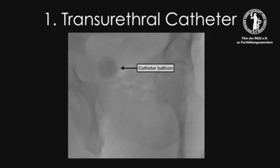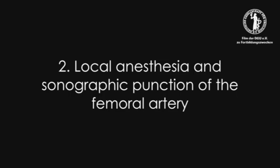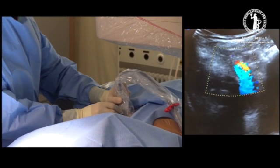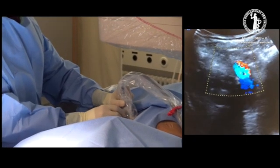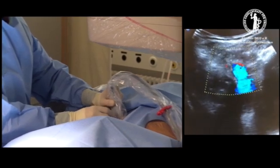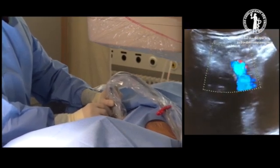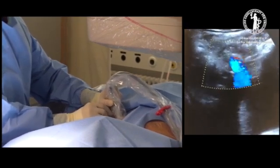The intervention starts with the insertion of the urethral catheter. The catheter balloon is filled with diluted contrast and helps with orientation during the intervention. Afterwards follows the ultrasound-guided puncture of the femoral artery and the infiltration of local anesthetics into the inguinal region.